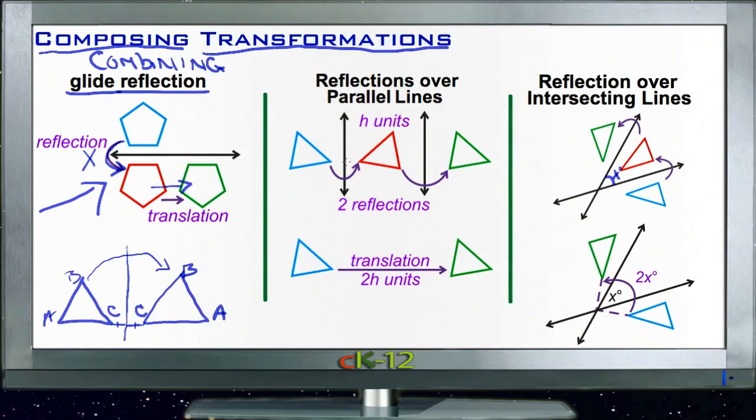If we reflect over a parallel line, in other words if we have a blue figure here and we reflect it by h units—in this case we'll pretend that this is a reflection of four units—if I reflect it over this vertical line by four units, then that means there's four units between this point here and this point here.